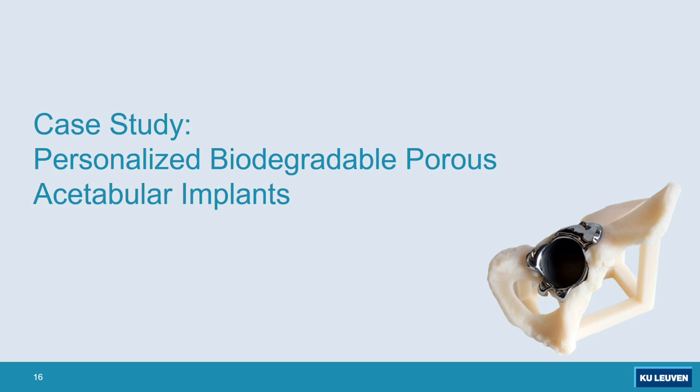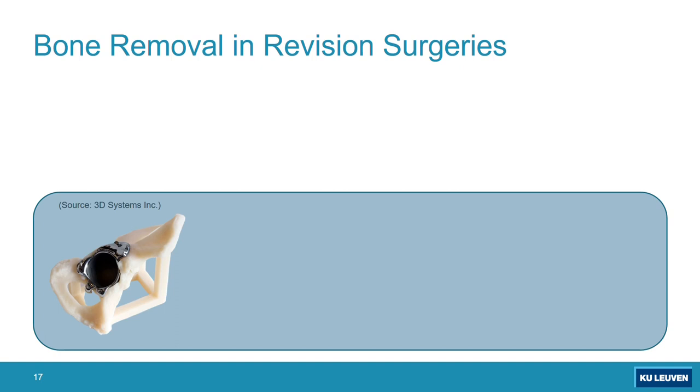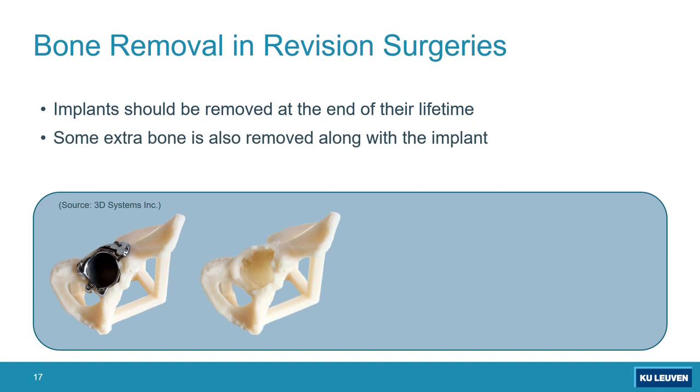For the case study that we did recently in collaboration with the University of Amsterdam, it was related to acetabular implants made from porous materials. In this case, the problem was in a revision surgery. This is a cup of the acetabular implant. When we have them implanted, after their lifetime they should be removed and replaced, but the problem is during the revision surgery, part of the newly formed bone is also removed along with the implant.